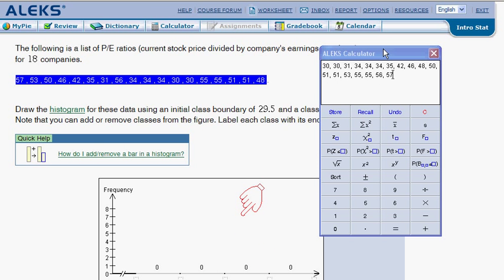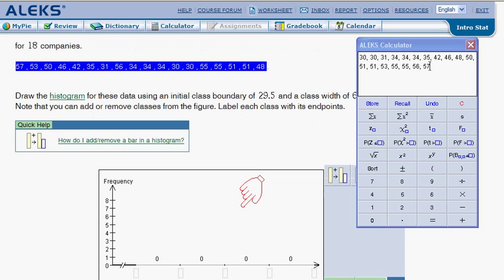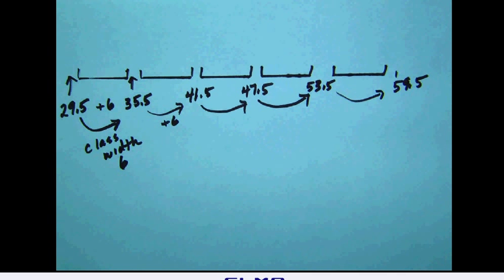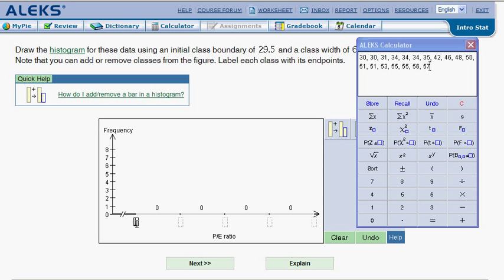So now what we have are our class boundaries set up and these class boundaries are what we're going to need to put down here at the bottom of our histogram. These numbers across here will be the class boundaries. Now our first class boundary, as we said, was 29.5. So type that in here and move across and type in those other ones of 35.5, 41.5, 47.5 and 53.5. And I'm out of space, notice that I don't have room for my last one.